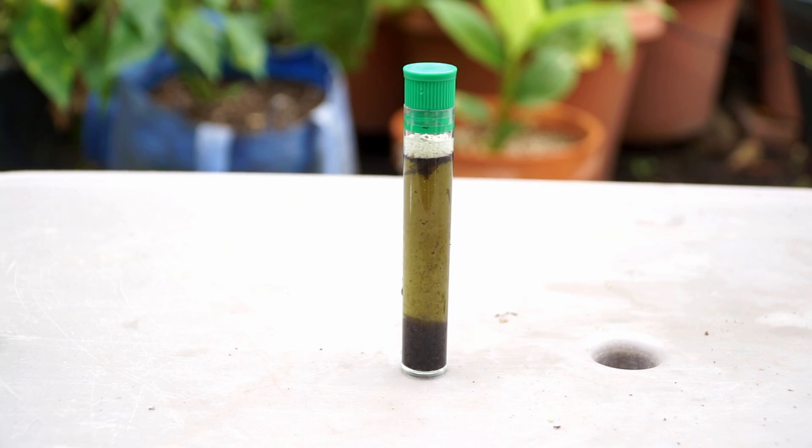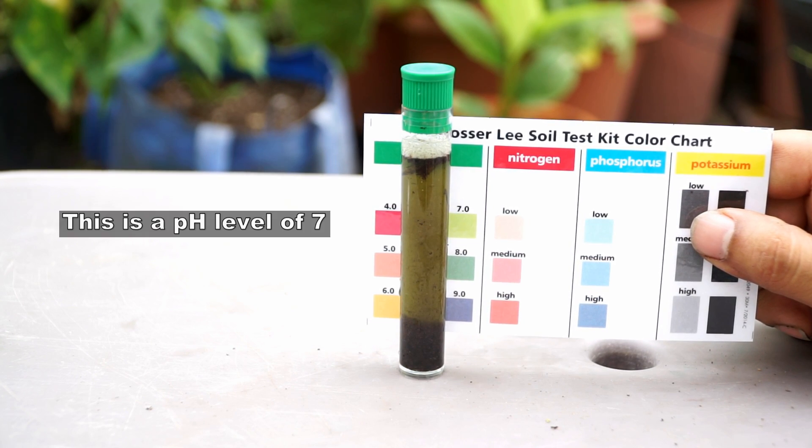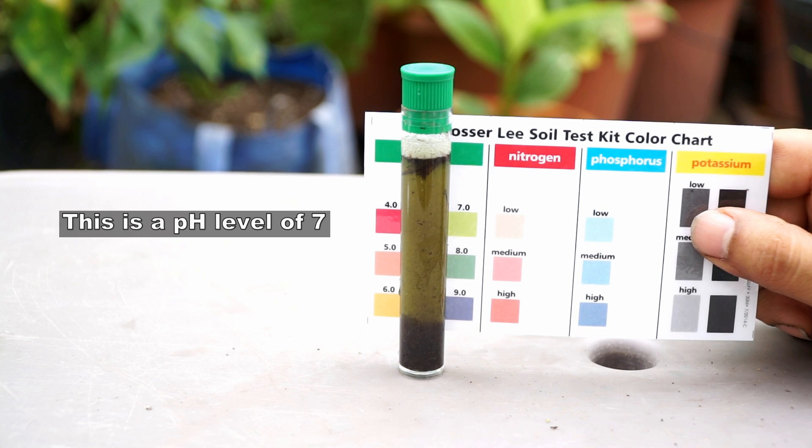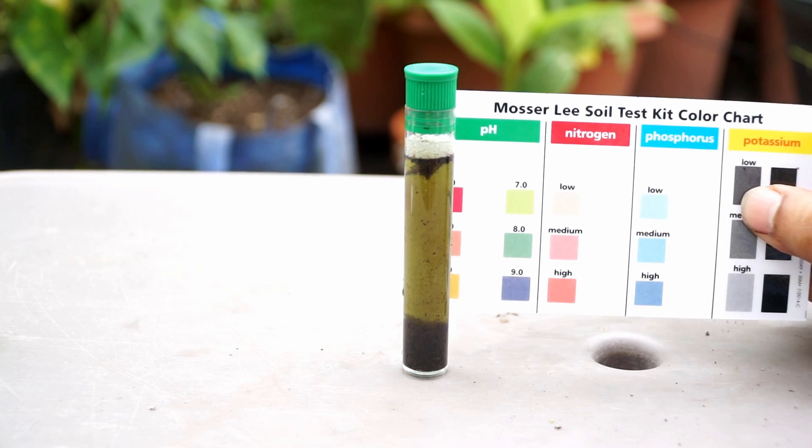Let's wait for the solution to settle down. It usually takes about a minute for the soil to settle down. Here you can see when we measure the pH level it's about seven, which is again ideal. So as long as your pH is between six and seven you're good.